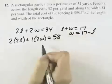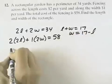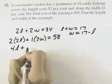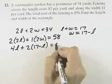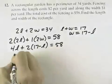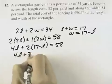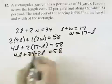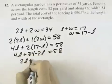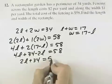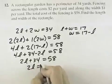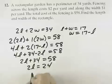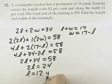Now we can use this in the second equation to write an equation in terms of just one variable. So we have 4L plus 2 times (17 minus L) equals 58. That gives us 4L plus 34 minus 2L equals 58. Combining the L terms, 2L plus 34 equals 58. Subtracting 34 from both sides, 2L equals 24.